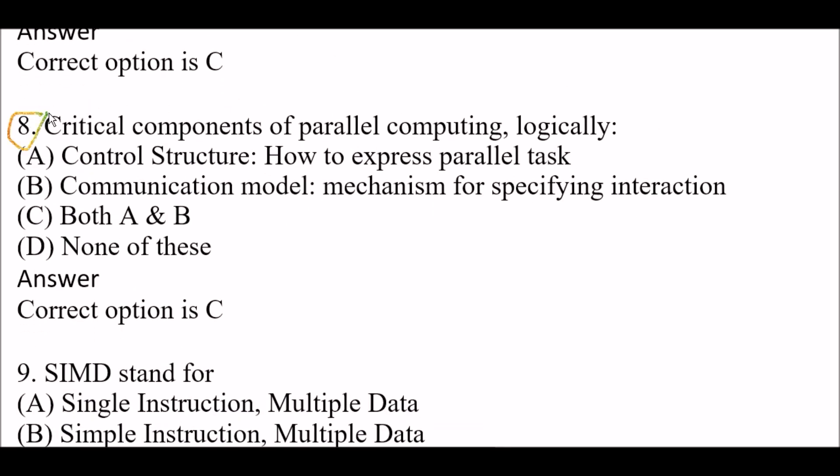Next question: critical components of parallel computing logically — option A, control structure, how to express parallel tasks; option B, communication model, mechanism for specifying interaction; option C, both A and B; option D, none of these. The right answer is option C, both A and B.